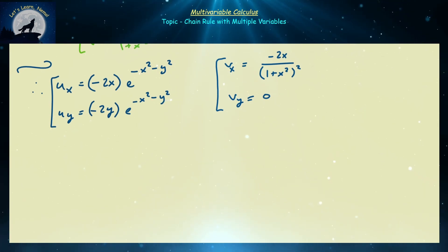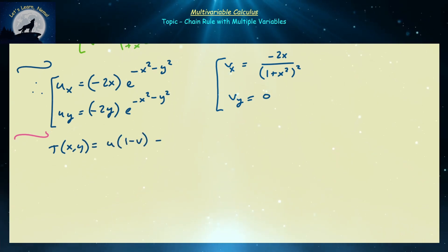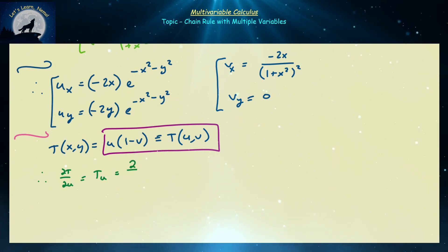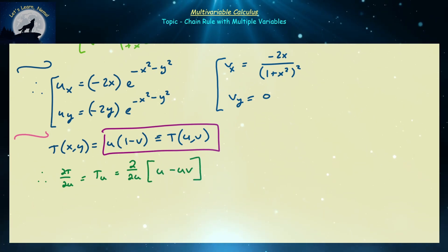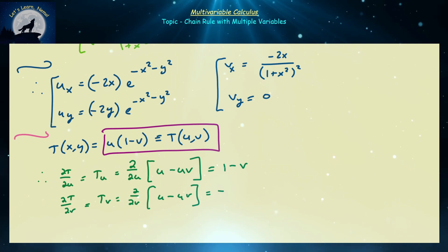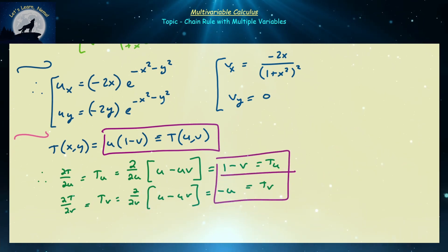Now let's find the partial derivatives of T with respect to u and v. Since T = u·(1−v) = u − uv, treating v as constant for ∂T/∂u gives ∂T/∂u = 1 − v. Treating u as constant for ∂T/∂v gives ∂T/∂v = −u. So we now have all six components: u_x, u_y, v_x, v_y, T_u, and T_v, and we know that u and v depend on x and y. We can now analyze how T changes with respect to x and y.